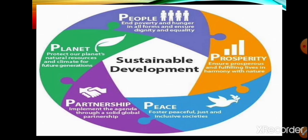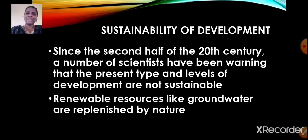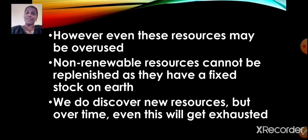Let us proceed further with sustainable development. Sustainable development is development that meets the needs of the present without compromising the ability of future generations to meet their own needs. Since the second half of the 20th century, scientists have been warning that the present type and levels of development are not sustainable because natural resources are exploited at a fast rate in the name of development, leading to their depletion. Renewable resources like groundwater are replenished by nature, but even these resources may be overused, so we must use them carefully.